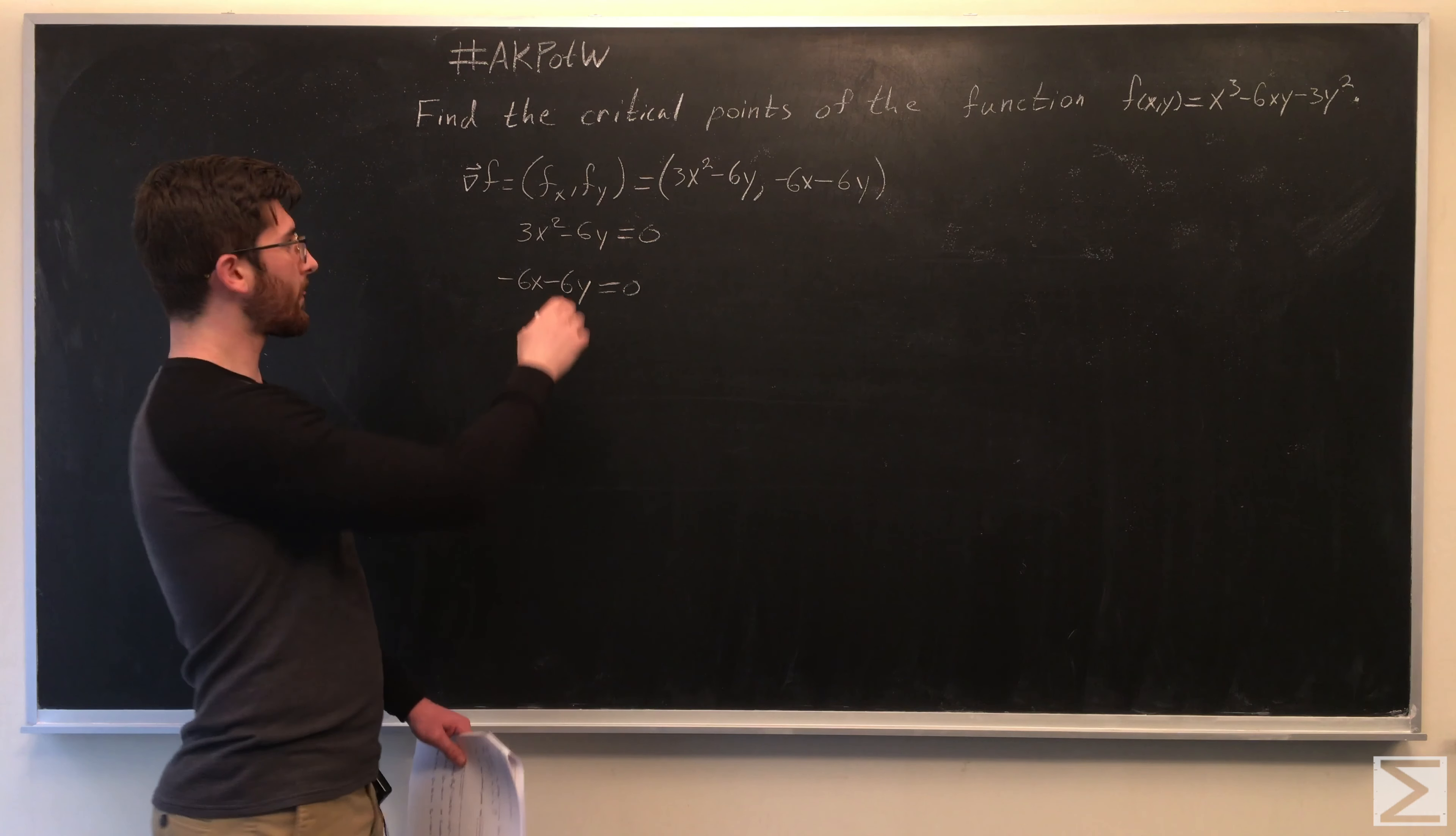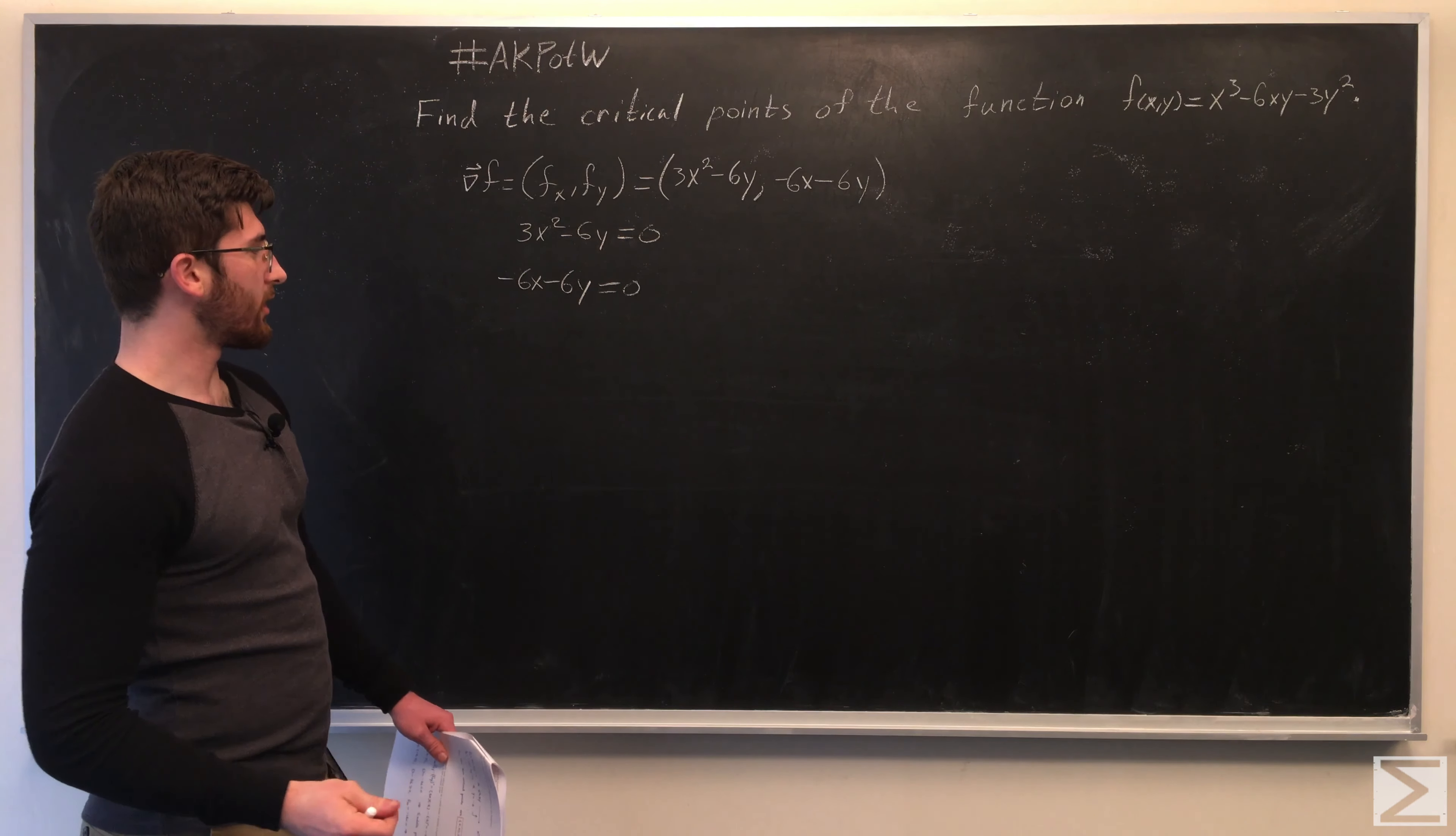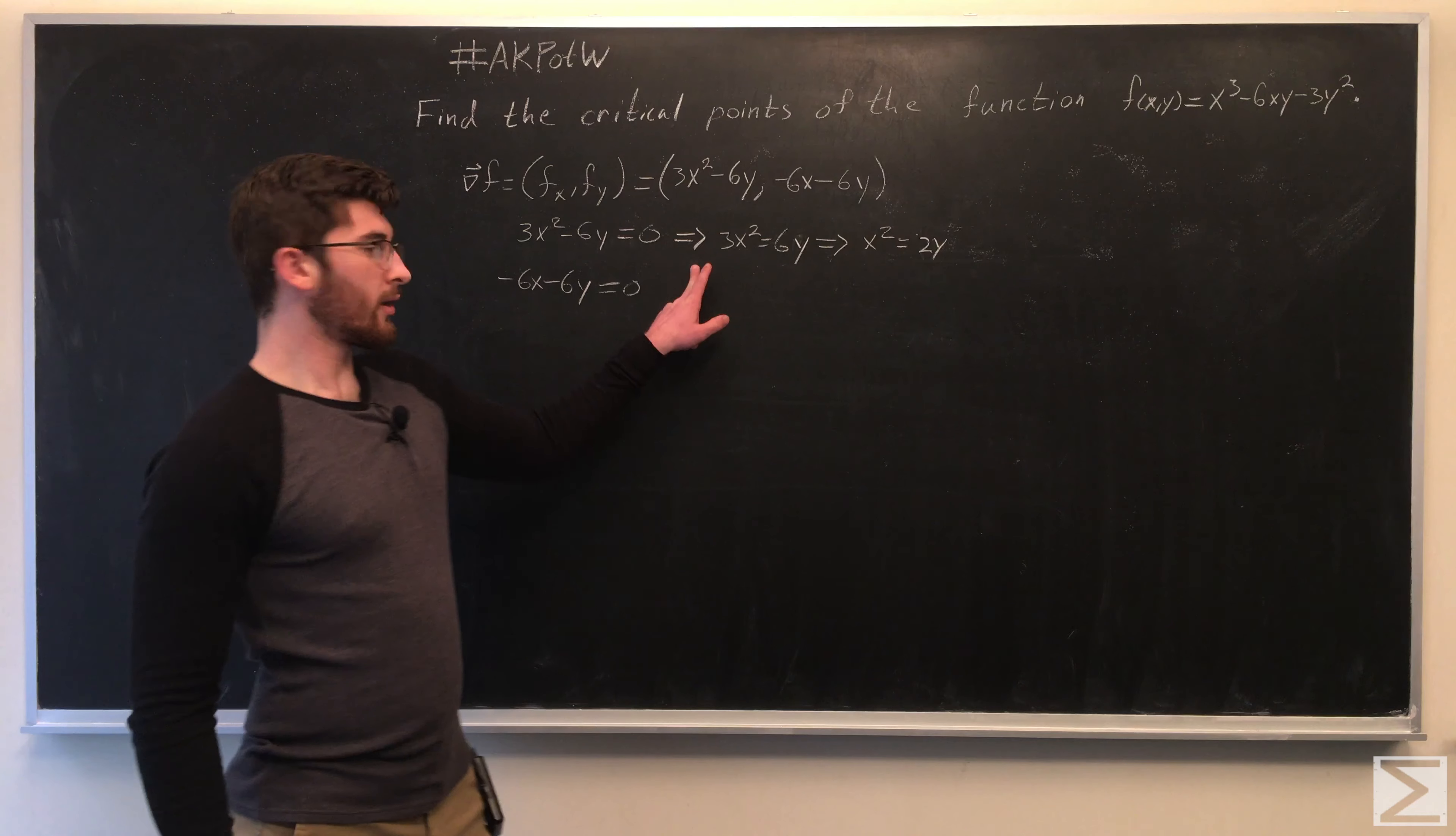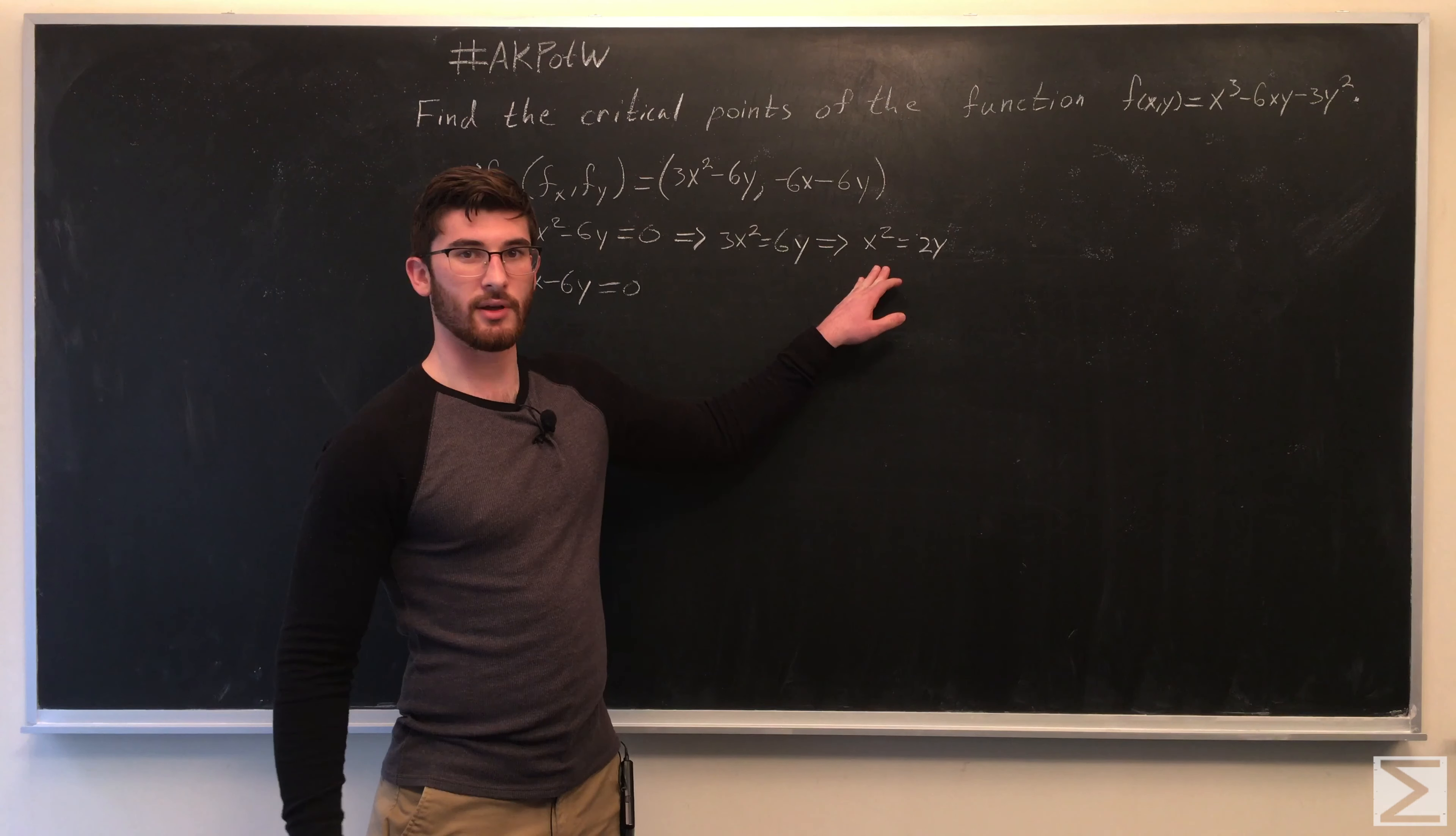So let's start with our partial derivative of f with respect to x and go ahead and move our terms around. When we look at f_x, we find that x² = 2y.